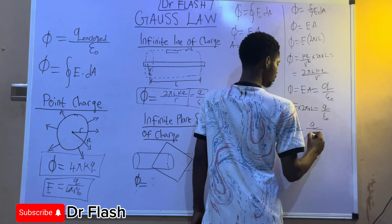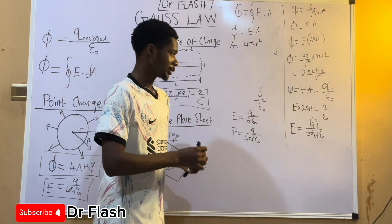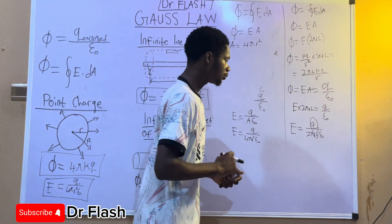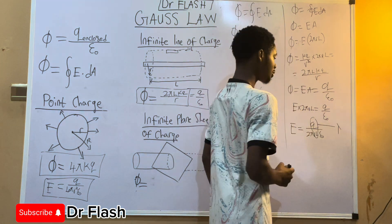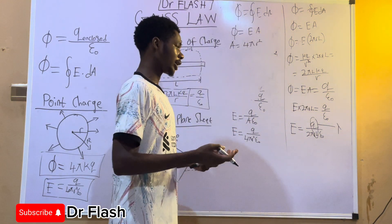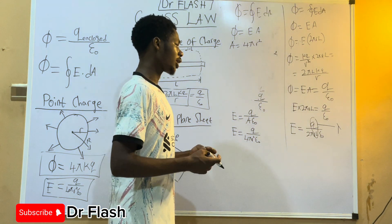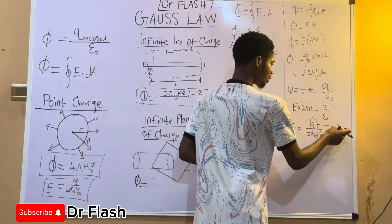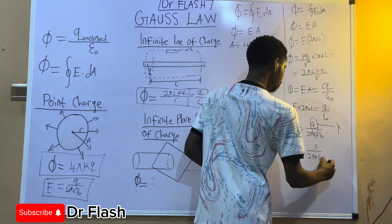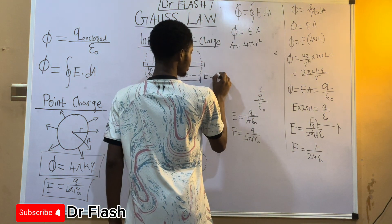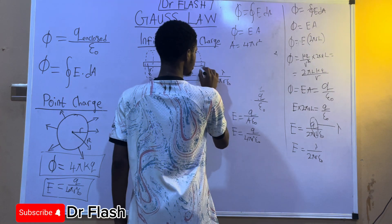Using flux equals Q/ε₀ and area equals 2πrl, the electric field intensity E = Q / (2πrl·ε₀). Now, Q/l has a special name — it is the linear charge density, represented by lambda (λ). There are also area charge density Q/A (sigma) and volume charge density Q/V. So for the line charge, E = λ / (2πr·ε₀).